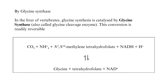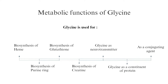Metabolic Functions of Glycine: Glycine is used for the biosynthesis of heme, purine ring, glutathione, and creatine. Glycine also functions as a neurotransmitter, as a constituent of protein, and as a conjugating agent.